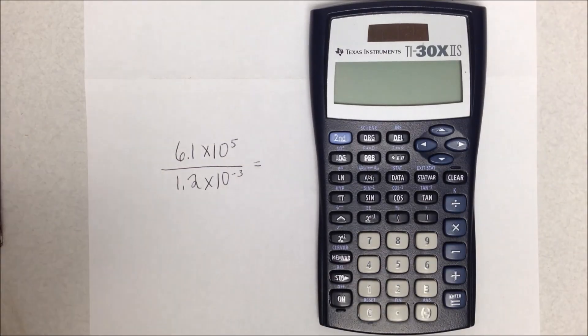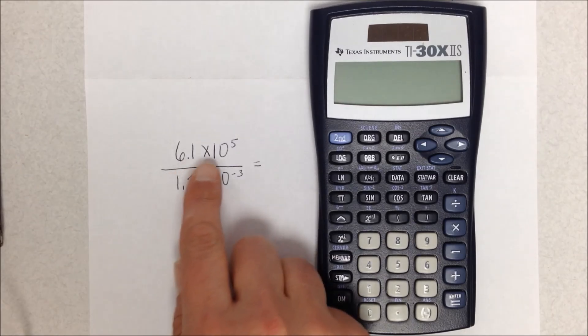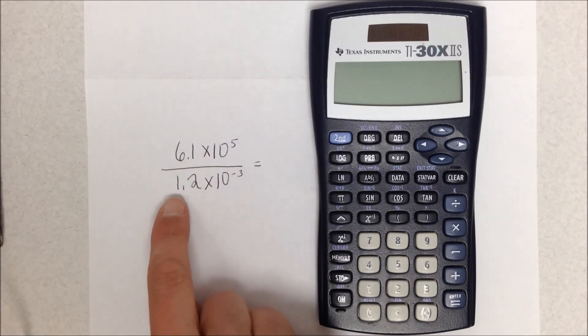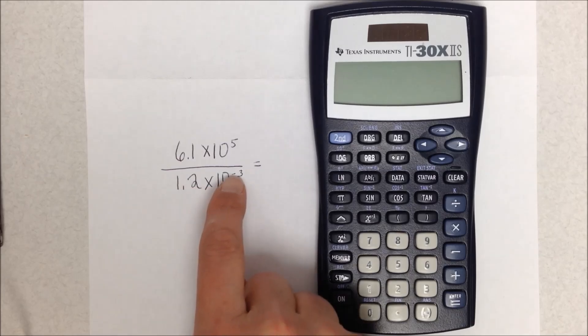So we're going to solve this problem, and we're using numbers that are in scientific notation. I want to show you how to enter this correctly into your calculator. My problem is 6.1 times 10 to the fifth divided by 1.2 times 10 to the minus third.